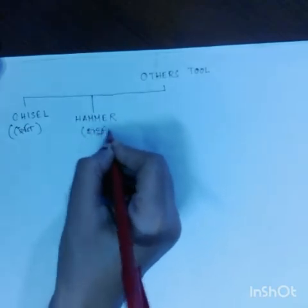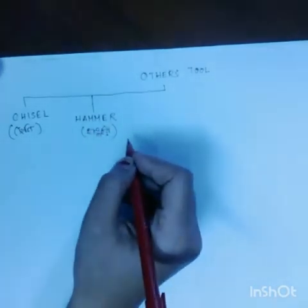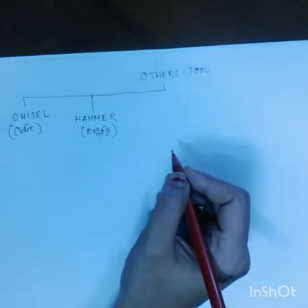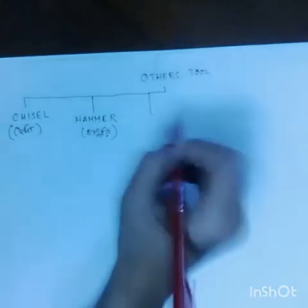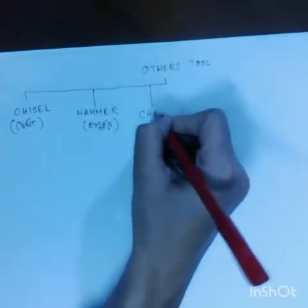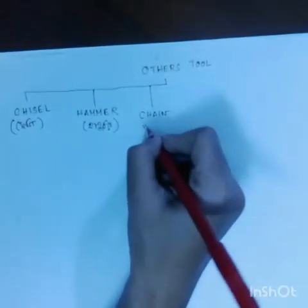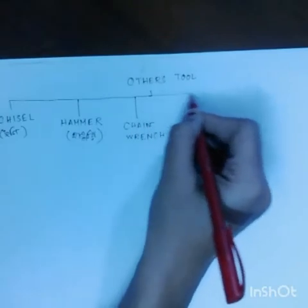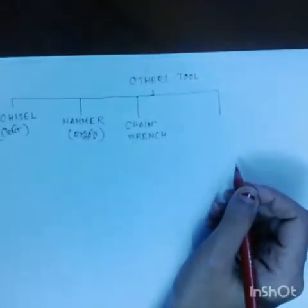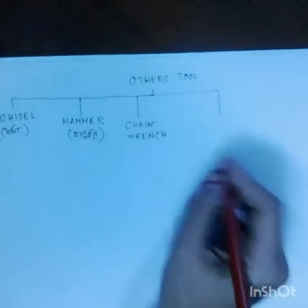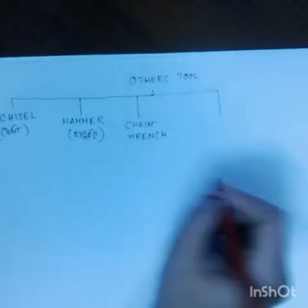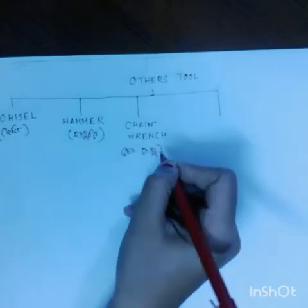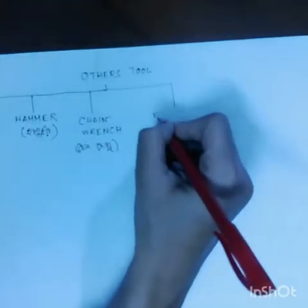First tool is chisel. Chisel means cheni. Next is the chain wrench. This is the chain wrench, and next is the rubber jumper.